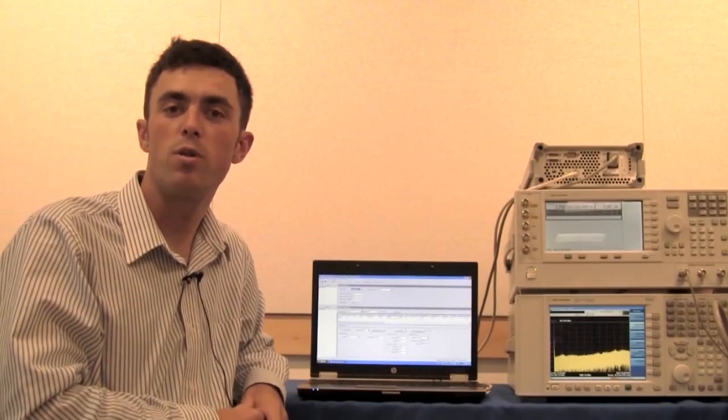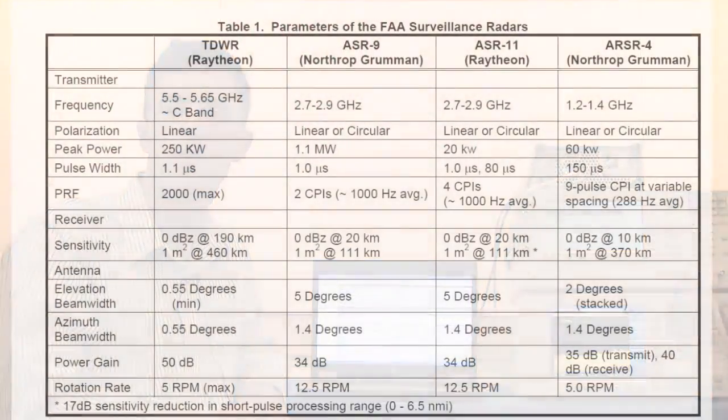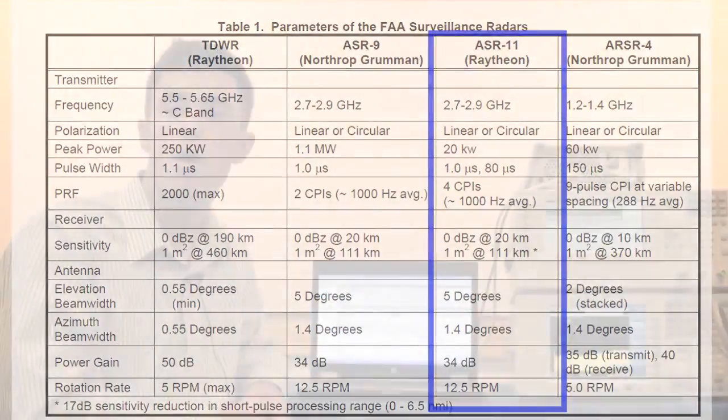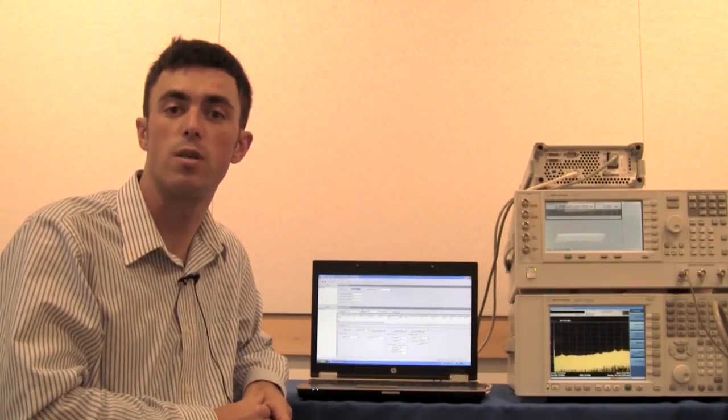We're going to build our pulse pattern using the ASR-11 FAA characteristics found online. These parameters include pulse width, frequency, power, and antenna characteristics. We're going to input those into Signal Studio for pulse building to generate our real-world signal.